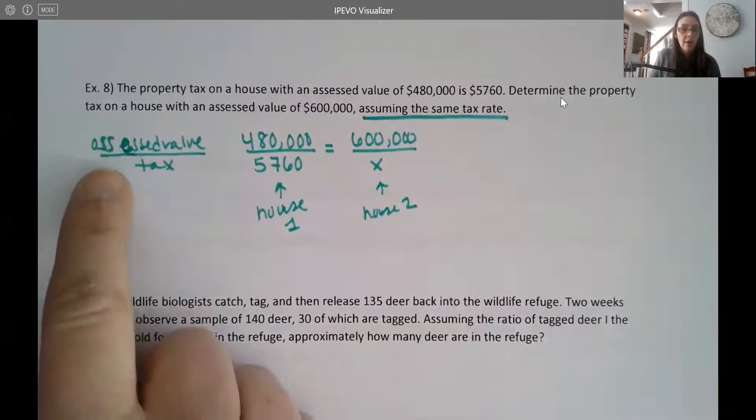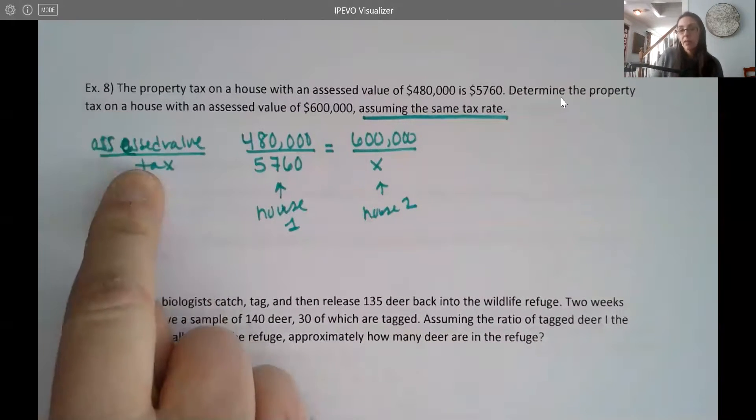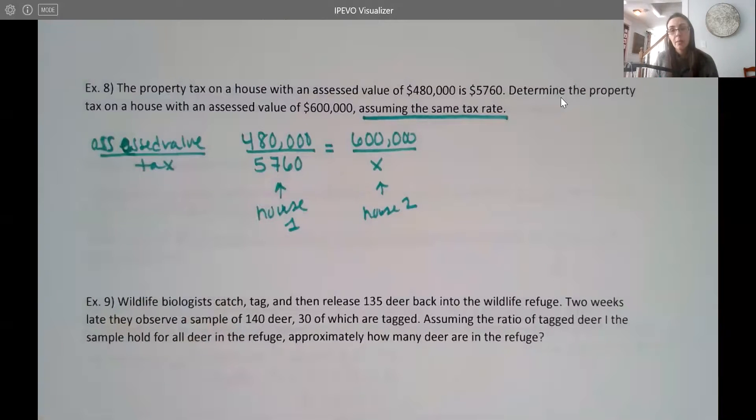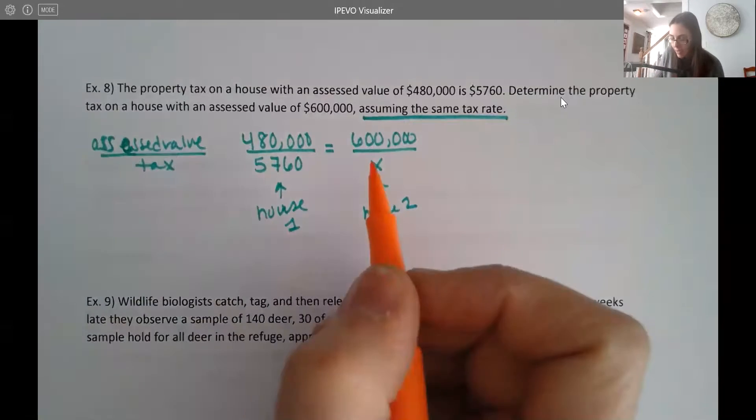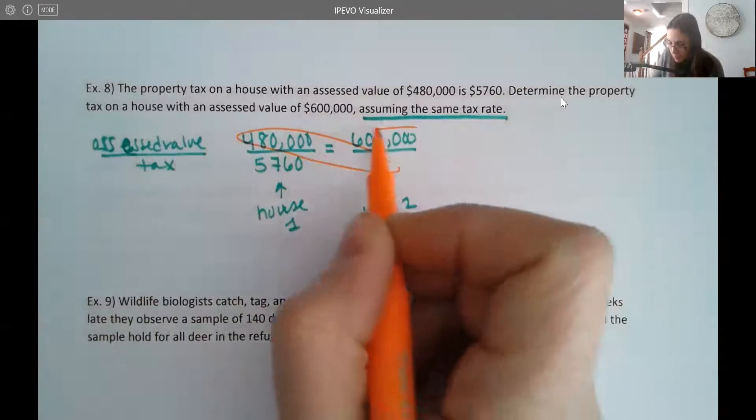Now, I actually could have written this the other way. If I wanted to put the tax on top and the assessed value on bottom, that actually would be fine too. It doesn't matter, as long as I set them up consistently, it's okay. And then I can go ahead and use proportions here to solve.